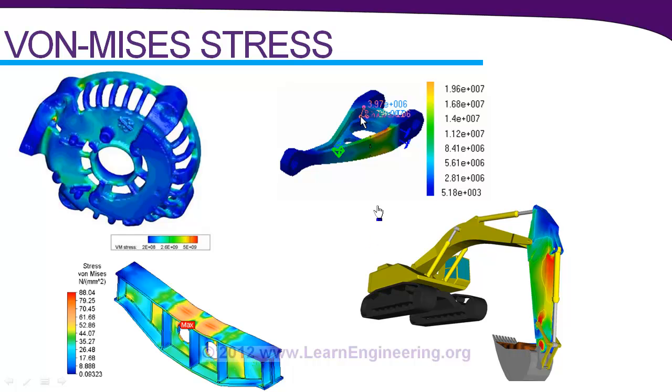That means here we can see Von Mises stress induced in these materials and the engineer can say if maximum value of Von Mises stress induced in this material is greater than the strength of the material then the design fails and this assumption works well for most of the cases especially when material is ductile in nature.